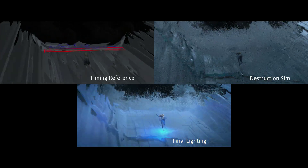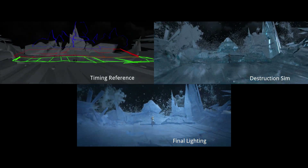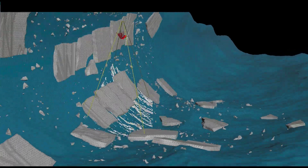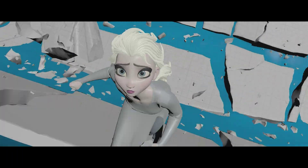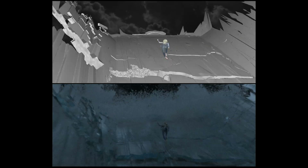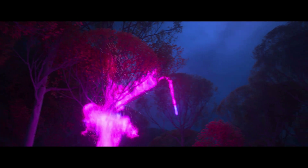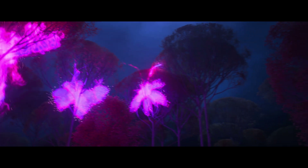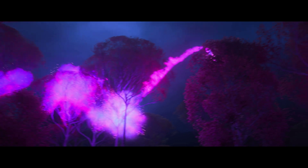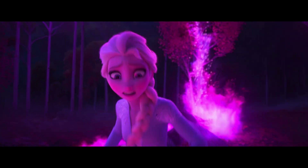The ice structure that Elsa creates was fractured to allow us to choreograph it buckling from the massive wave underneath. A mixture of rigid body and large flip-tank simulations provided us the final result.